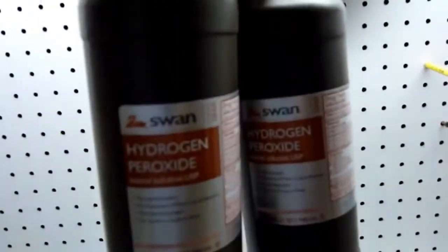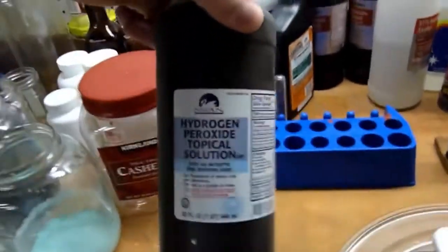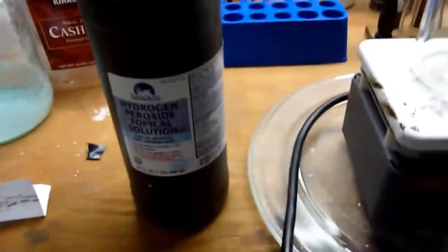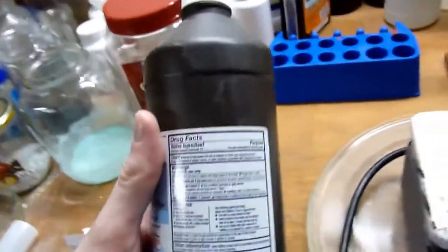Whereas these two quarts of 3%, they cost me $0.99 at Costco. So, this is just like Swan brand 3% hydrogen peroxide, and this is also Swan, but it's like an older bottle. Anyway, you just got to do a little math to find out how much 3% is going to make you whatever concentration you need.